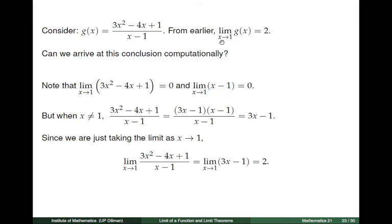Let us see. The numerator 3x squared minus 4x plus 1 has the limit equal to 0 as x tends to 1. We can see this by plugging in 1 to the polynomial. Likewise, the denominator x minus 1 has the limit 0 as x tends to 1. We can easily see this by plugging in 1 to x minus 1. So, we see that we cannot simply divide the limit of the numerator by the limit of the denominator to obtain the desired conclusion.